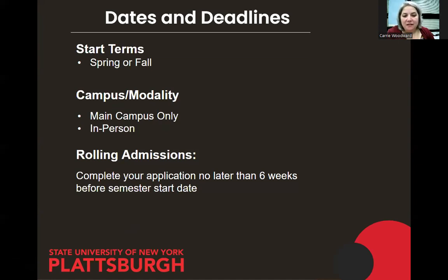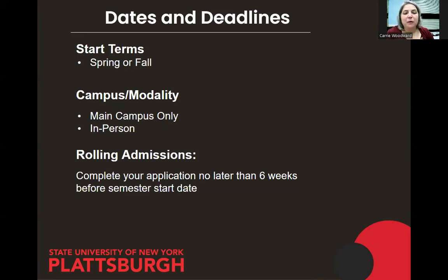The Natural Resources and Ecology program admits new students in both the fall and spring. We're currently accepting applications for the fall term, which starts at the end of August. We're on rolling admissions with no firm deadline, but we recommend completing your application at least six weeks before the start of the semester to ensure time for faculty review, any additional conversations, and a decision. This program is not online — it is a fully face-to-face program at our main campus in Plattsburgh, New York.